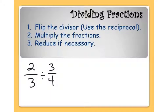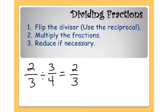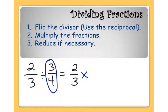In this example, 2 thirds divided by 3 fourths — I want to rewrite that division statement into a multiplication problem. I start by taking my 2 thirds and rewriting that. Now instead of dividing, we're actually going to multiply. Now here's the tricky part: we need to use the reciprocal of 3 fourths, which is another way of saying we need to use the flipped version of 3 fourths.